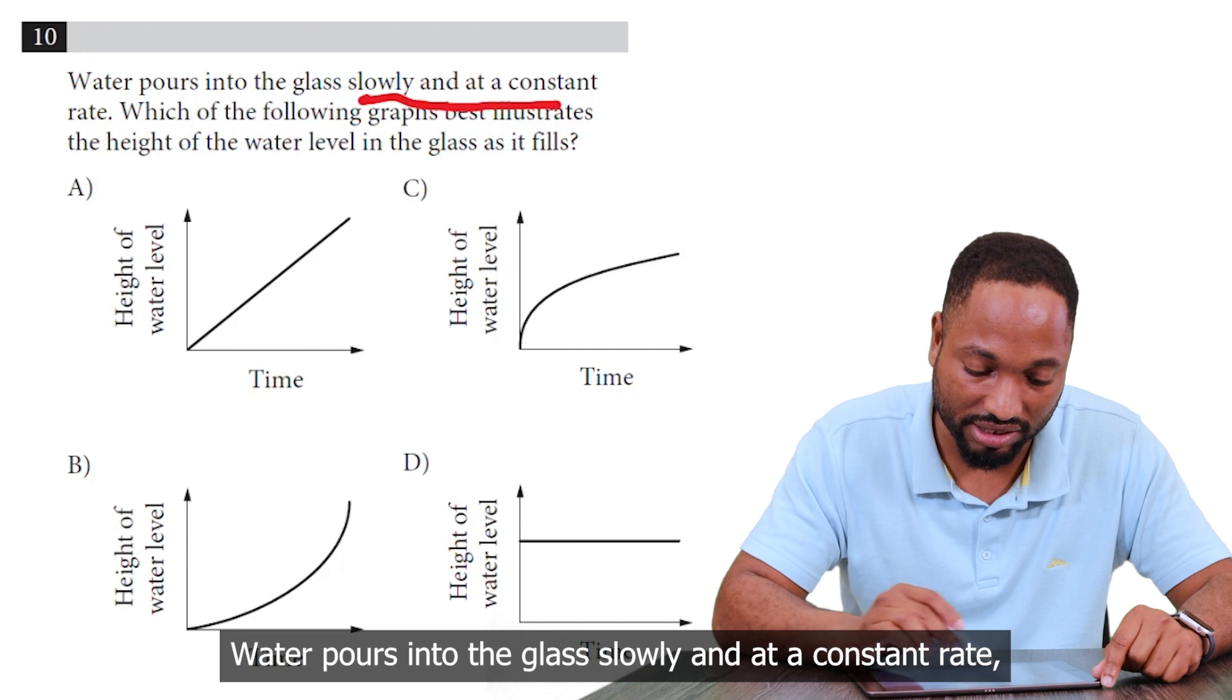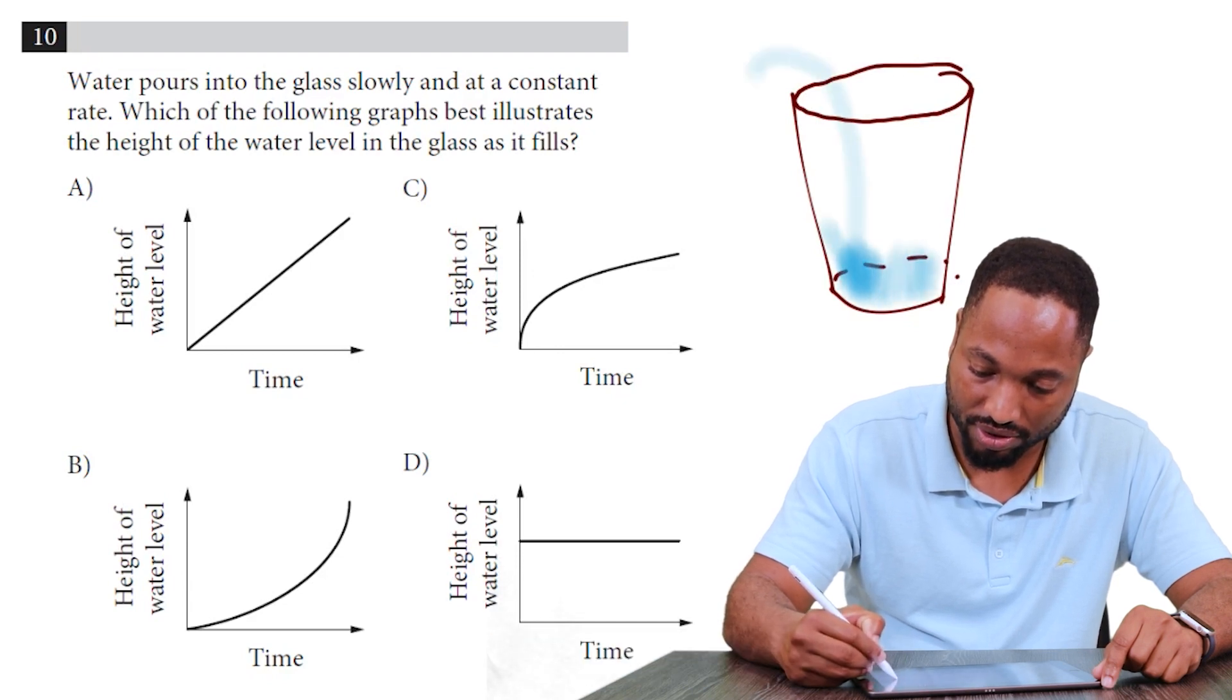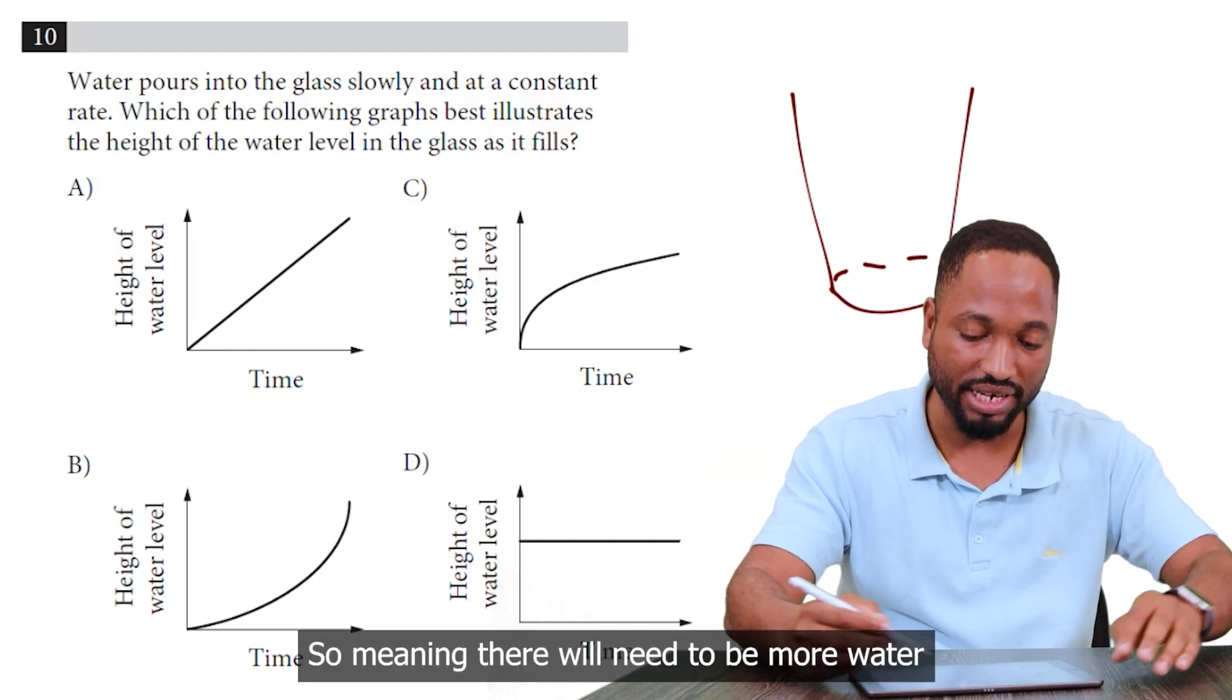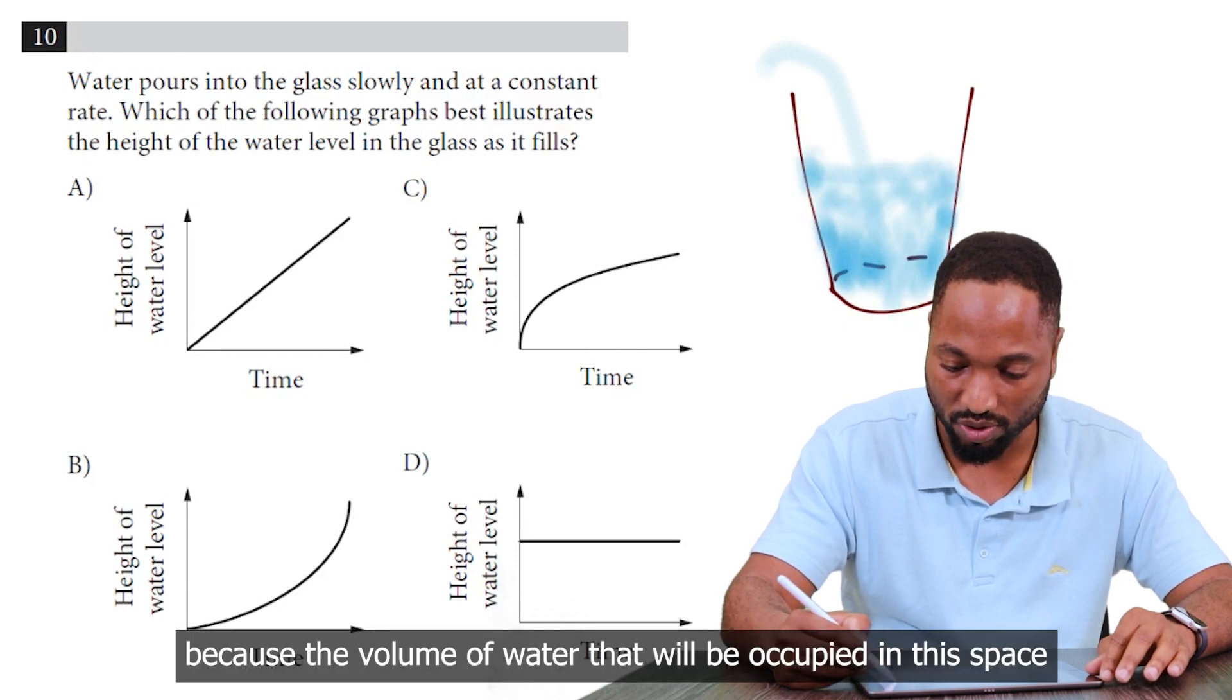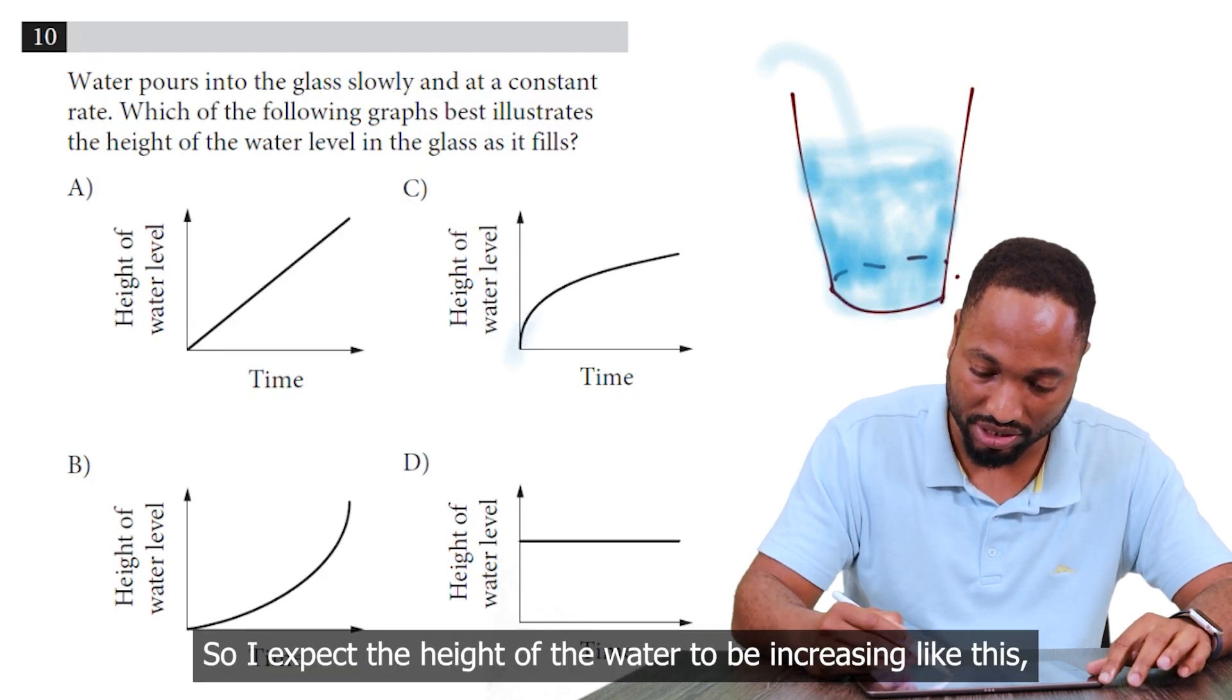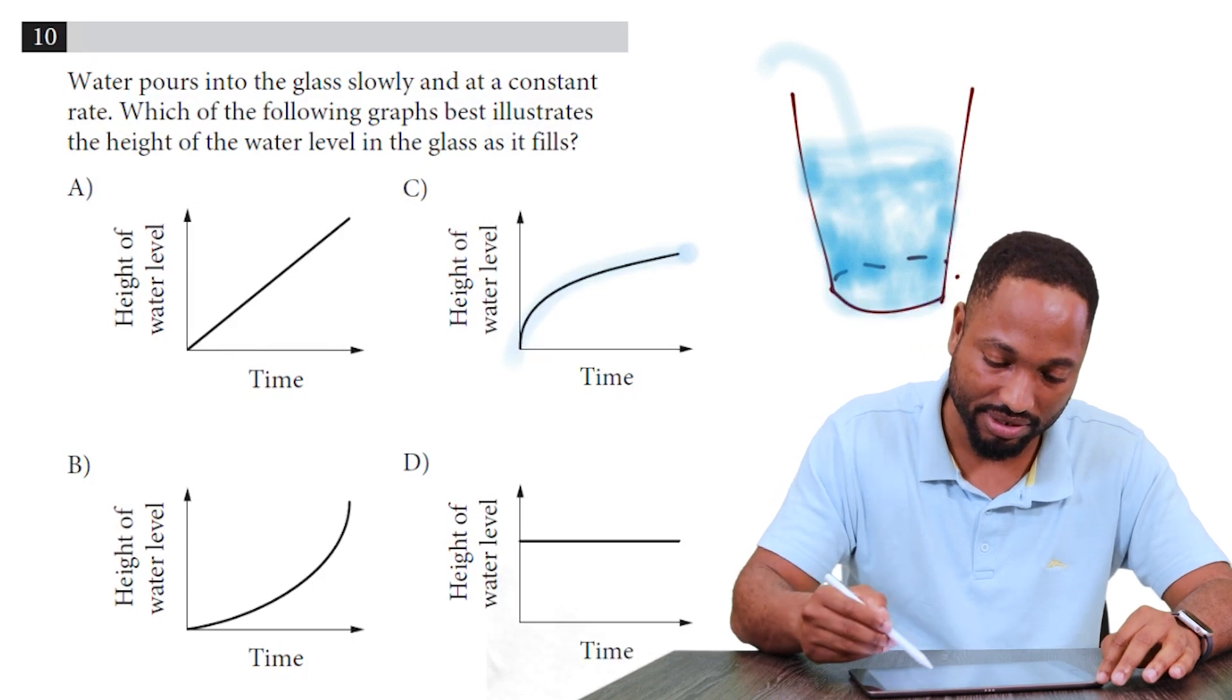Water pours into the glass slowly and at a constant rate. Which of the following best illustrates the height of the water in the glass. Water is pouring in at a constant rate. Now the height, you might think the height would go up at a constant rate as well, but it's getting wider as it goes up. So meaning there needs to be more water to raise the height every time it goes up. Because the volume of water that will be occupied in this space is more than like say this space here. Because it's wider, it's getting wider at the top. So I expect the height of the water to be increasing like this. Meaning it's getting slow as time goes on. So I think C is like the ideal answer here. C boy.